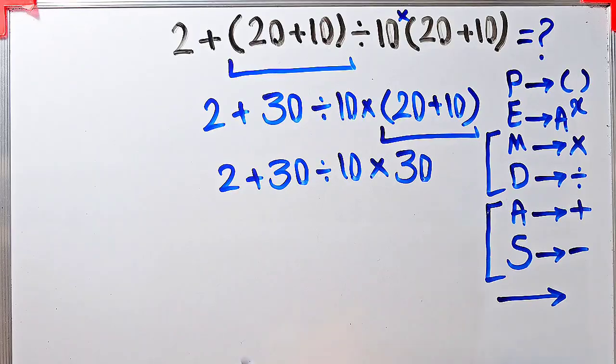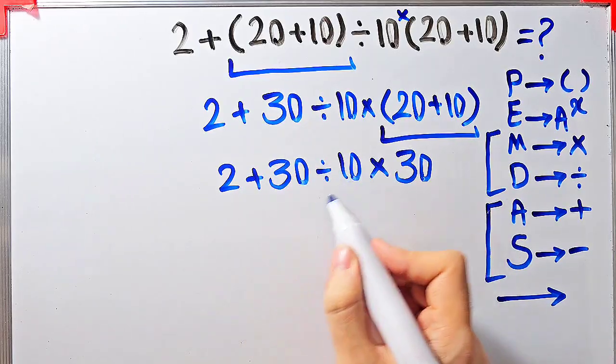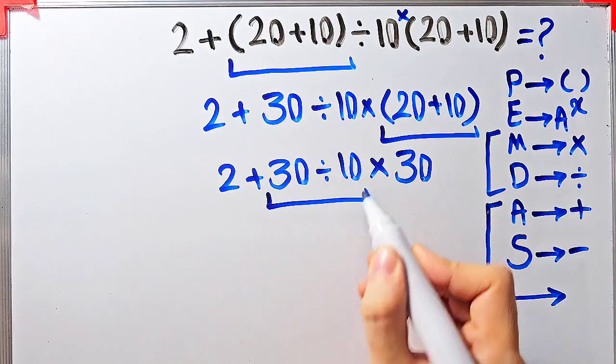Now we have addition, division and multiplication. First we simplify this division. 30 divided by 10 equals 3.